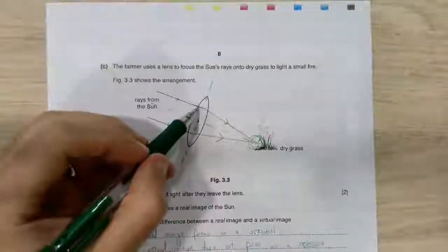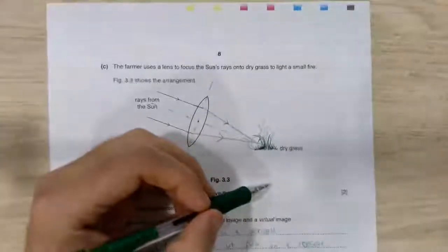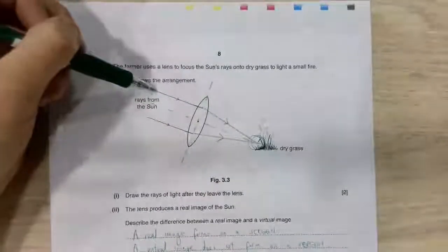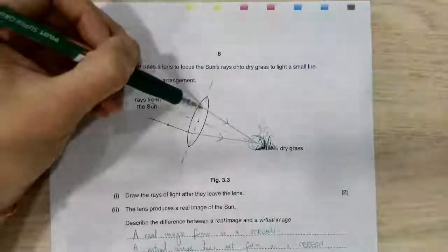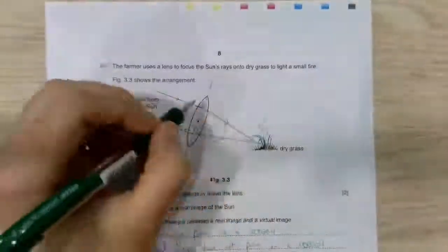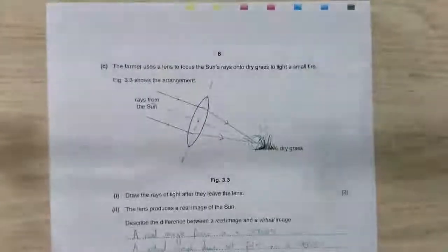Now, in real life, what it does is it changes as soon as it hits the glass. So it bends and it bends, it actually bends twice. However, in CIE, for a simplified way, you can keep that line moving forward until the middle of the lens and then just change the direction once. As long as the lines are straight and they focus onto the dry grass, that's fine.